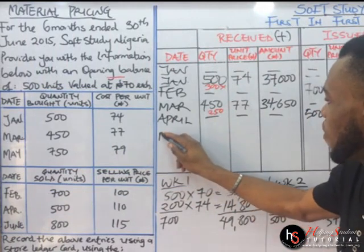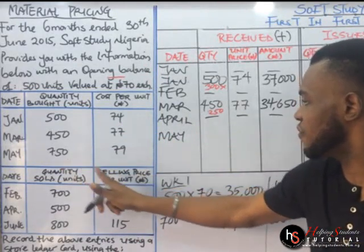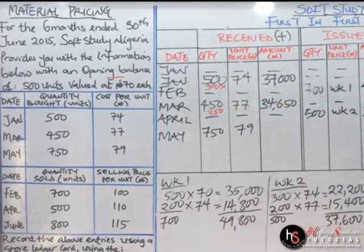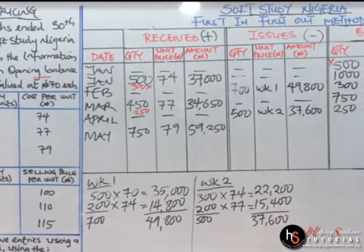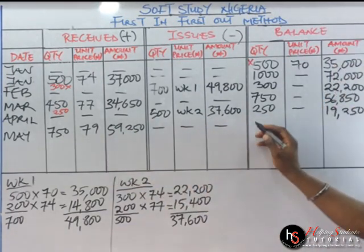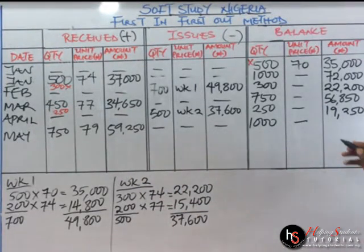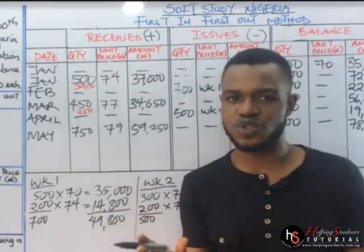We come over to May. This is in the receipt section. We have 750 units at 79 naira. 750 times 79 gives us 59,250. Under issues, there is no transaction. So 250 plus 750 gives us 1,000 units in the balance. Then 59,250 plus 19,250 gives us 78,500. For the receipt section, we don't have issues with it.